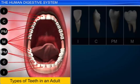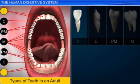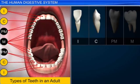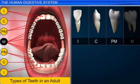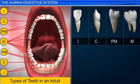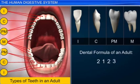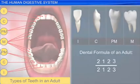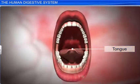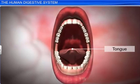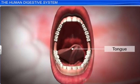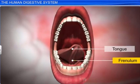The arrangement of teeth in the upper and lower half of the jaw, in the I, C, PM, and M order, is expressed using the dental formula 2-1-2-3 upon 2-1-2-3. The tongue, the second member of the oral cavity, is a freely mobile muscle attached to the floor of the oral cavity by the frenulum.